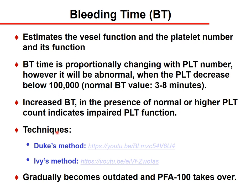An increased bleeding time in the presence of a normal or higher platelet count indicates impaired platelet function. Two methods are used to measure bleeding time: the Duke method and the Ivy method, the latter being most commonly used in Hungary. Both methods are gradually becoming outdated because they are not well standardized and show high variability between performers. The PFA (Platelet Function Analyzer 100) is now taking over bleeding time measurement.